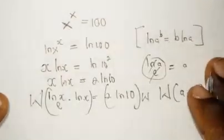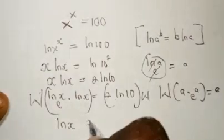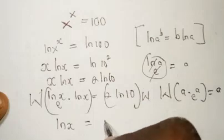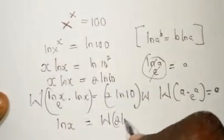Using our knowledge on this, you know that this is just equals to the natural log of x, and here we will be having W(2 ln(10)).